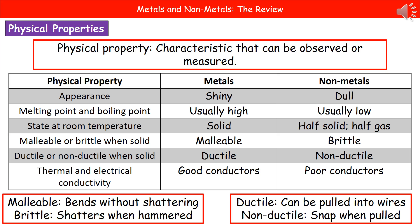In the table in the middle, you can see the different physical properties and what they are for metals and for non-metals. In terms of basic appearance, metals are shiny, whereas non-metals tend to be dull.